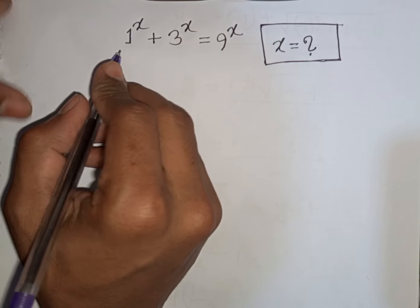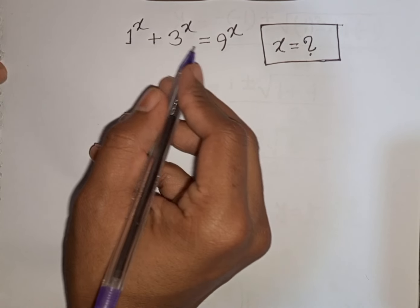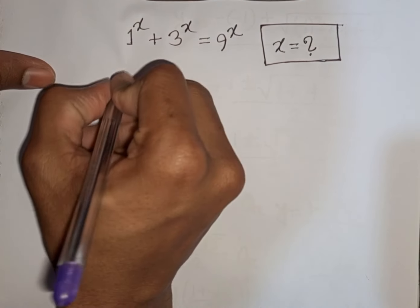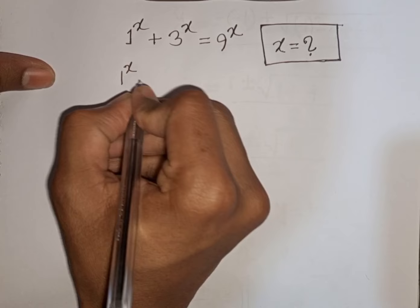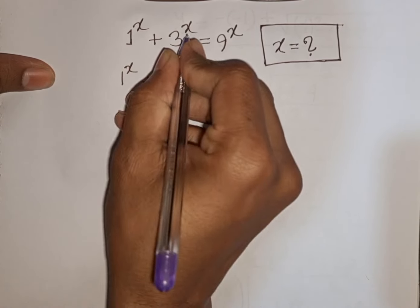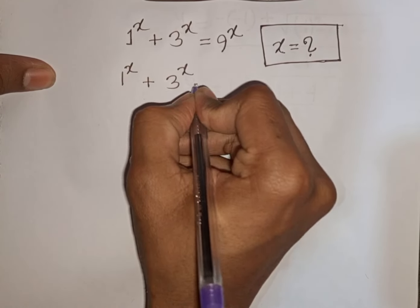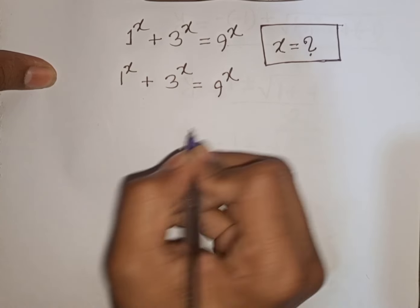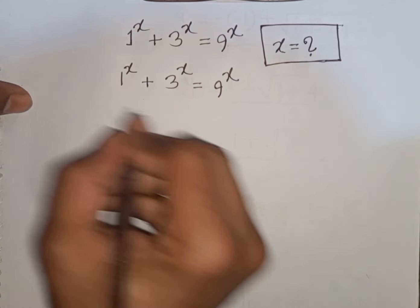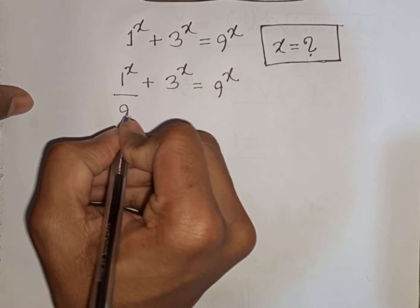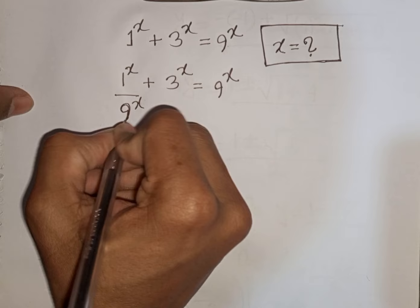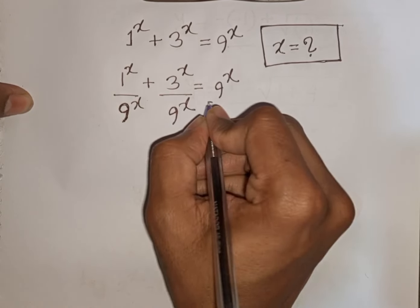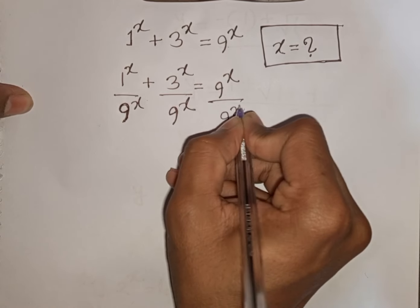How to solve 1^x + 3^x = 9^x — find the value of x. We divide both sides by 9^x: on the left we get 1^x / 9^x plus 3^x / 9^x, and on the right 9^x / 9^x.